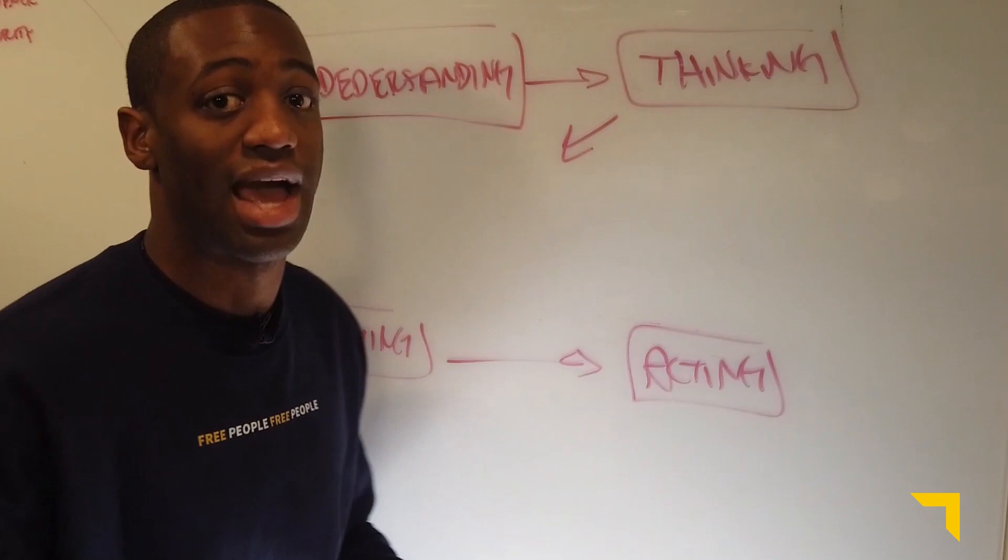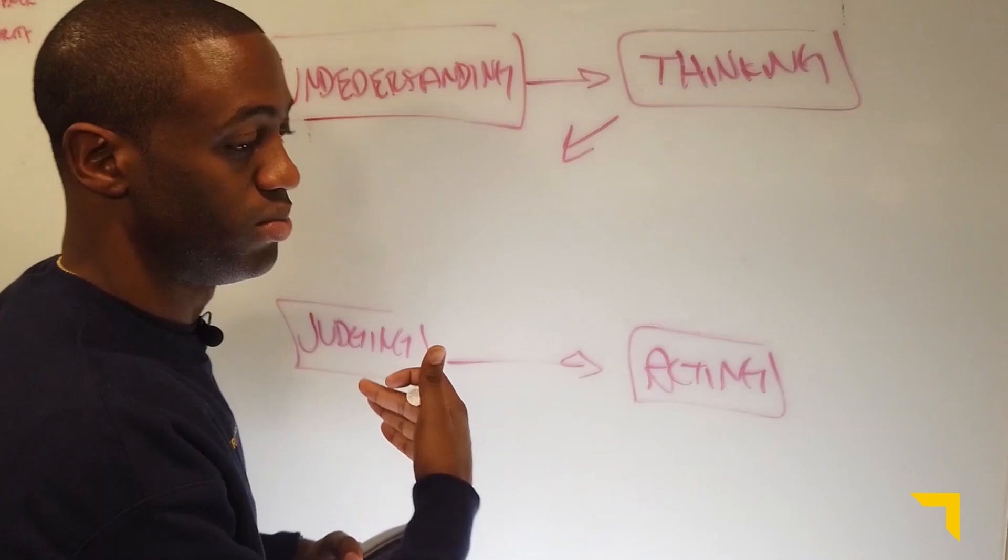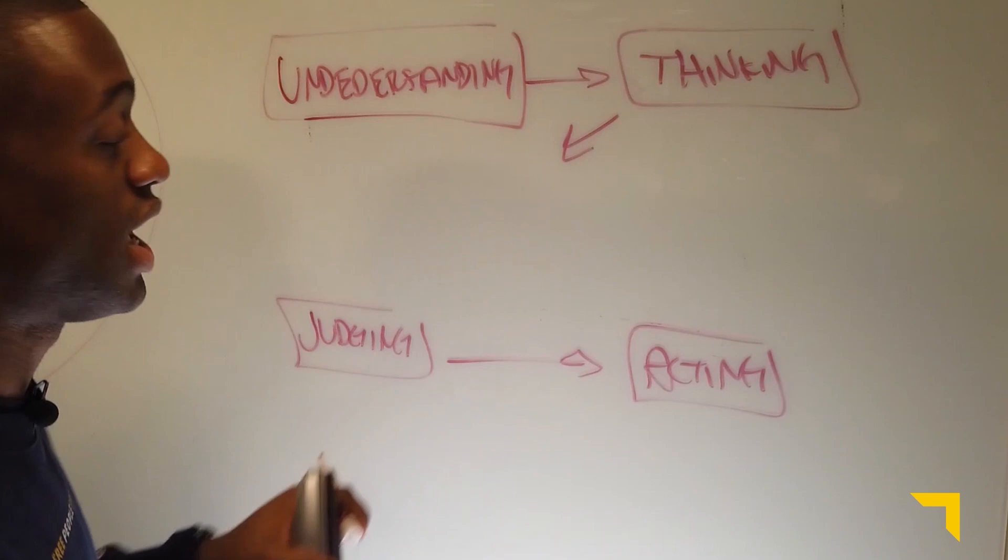So we have our four components on the board: understanding, thinking, judging, and acting. And now we can follow this process. Each one bleeds into the next one. So understanding leads you to thinking critically, and then thinking leads you to judging, making a judgment on something. And then after you make the proper judgment, then you go into action. And so we're going to break down each one one at a time.